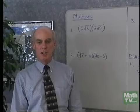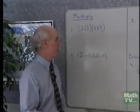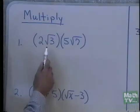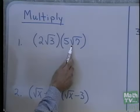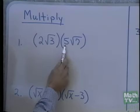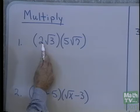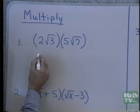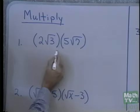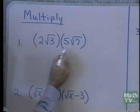We want to look at multiplication with radical expressions. Our first problem is 2 square root 3 times 5 square root 7. What happens is we can multiply the numbers outside the radical and we can multiply the numbers that are inside the radical. So we will end up with 10 square root 21.